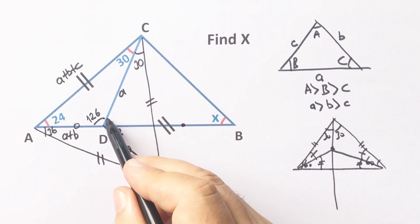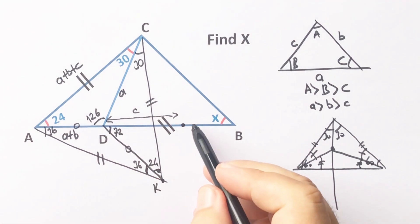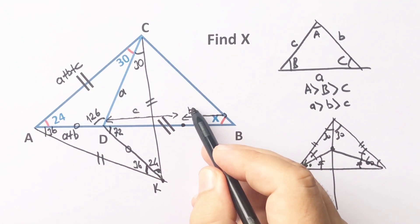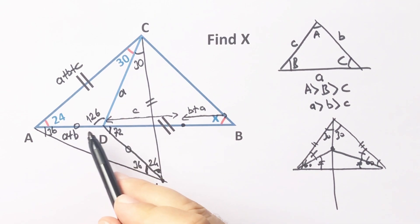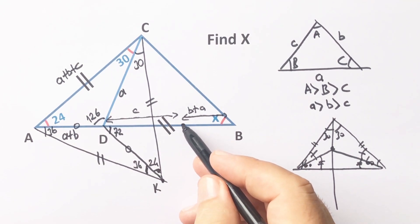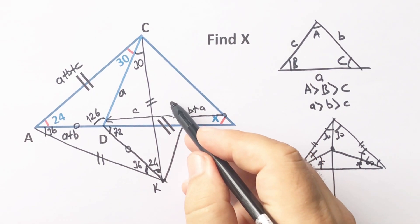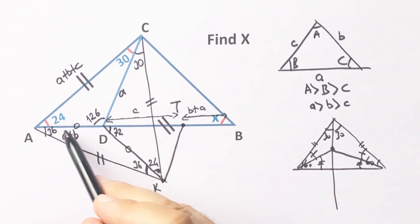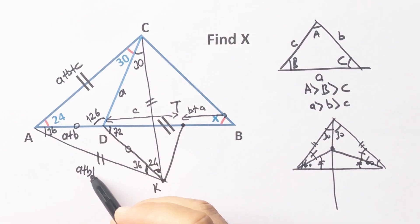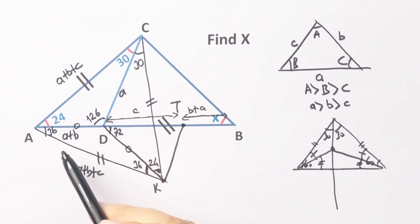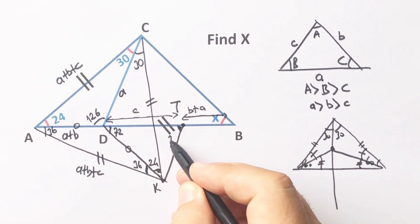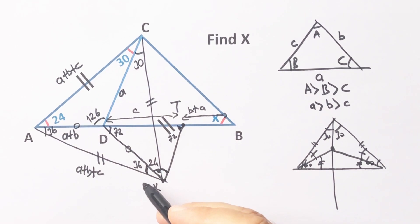If we separate this side into c and b plus a — because this length equals a plus b plus c — then if we connect here and call this point T, these two sides are equal. Notice we have one more angle in this triangle, so here must be 72 degrees and 12 degrees is left.